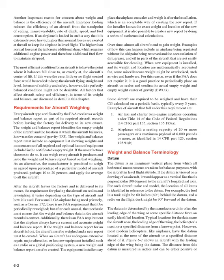The most efficient condition for an aircraft is to have the point where it balances fall close to, or exactly at, the aircraft's center of lift. If this were the case, little or no flight control force would be needed to keep the aircraft flying straight and level. In terms of stability and safety, however, this perfectly balanced condition might not be desirable. All factors that affect aircraft safety and efficiency in terms of weight and balance are discussed in detail in this chapter.